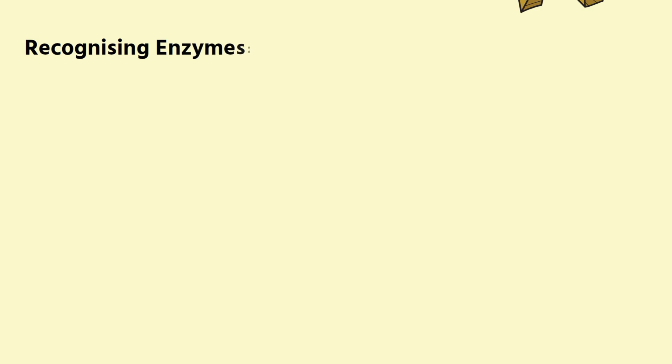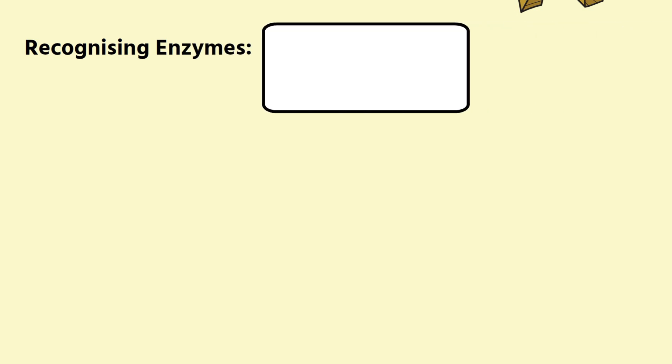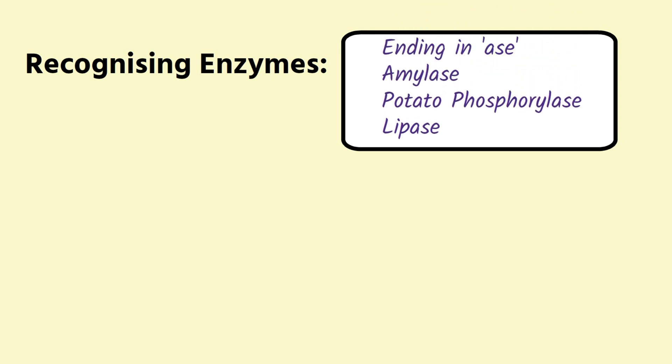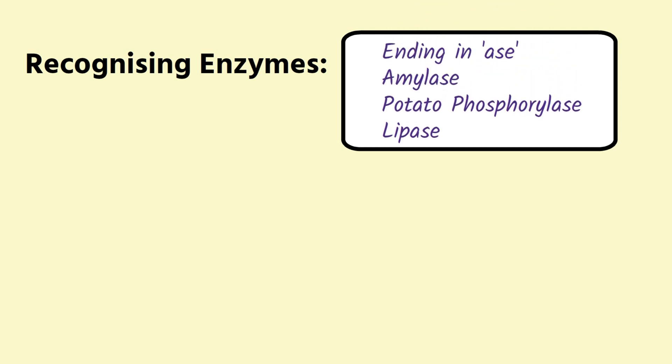How do you know if something is an enzyme? It's easy to recognise them by their name — they all end in '-ase'. Think of amylase, potato phosphorylase, lipase, or proteases.